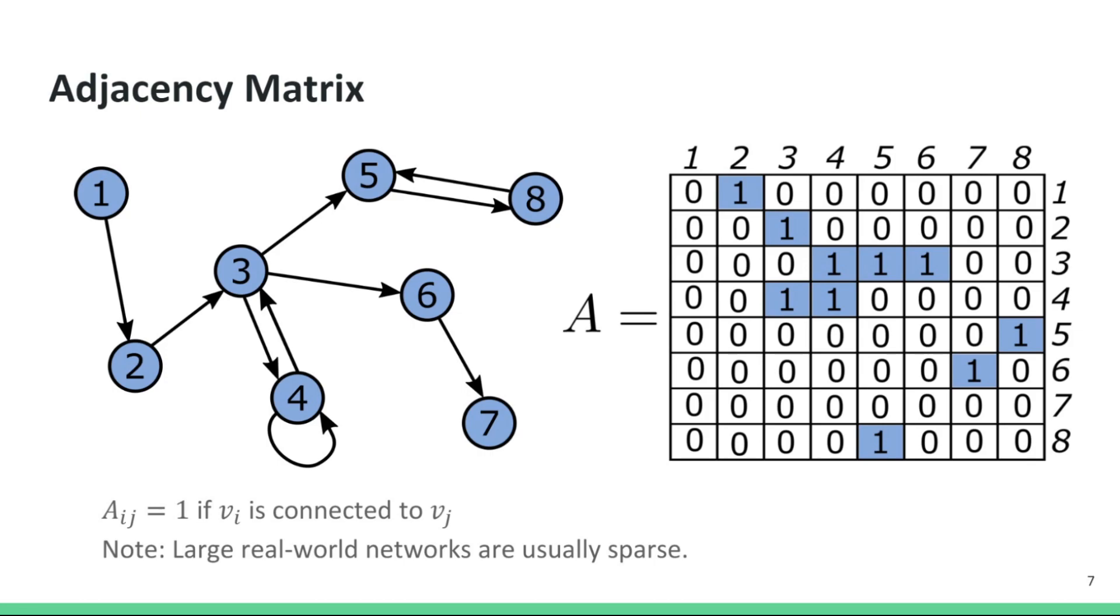Graphs representing large real-world networks are usually sparse and in those cases most entries in the adjacency matrix are zeros. Sparse matrix formats can be used to efficiently store such adjacency matrices.